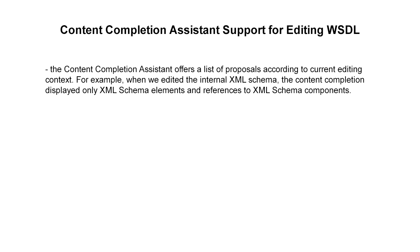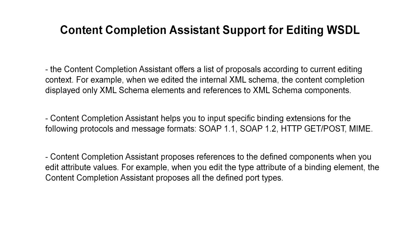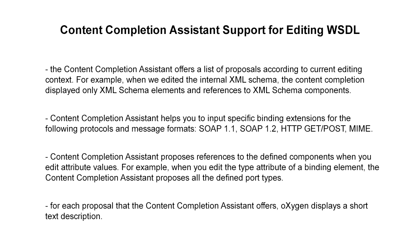Up to this point, we used extensively the Content Completion Assistant to highlight its importance in editing WSDL documents in Oxygen XML. The Content Completion Assistant offers a list of proposals according to the current editing context. For example, when we edited the internal XML schema, Content Completion displayed only XML schema elements and references to XML schema components. It also helps you input specific binding extensions for SOAP 1.1, SOAP 1.2, HTTP GET and POST, and MIME. The Content Completion Assistant proposes references to defined components when you edit attribute values — for example, when you edit the type attribute of a binding element, it proposes all the defined port types. For each proposal, Oxygen displays a short text description.